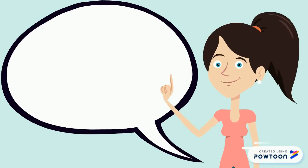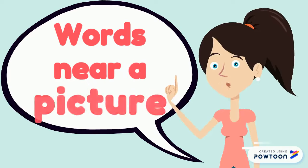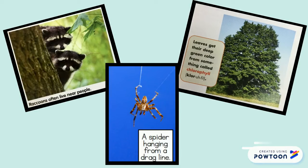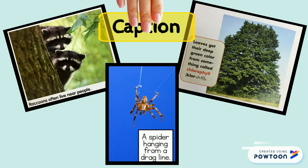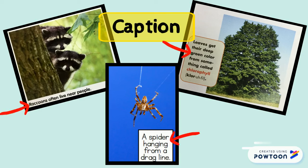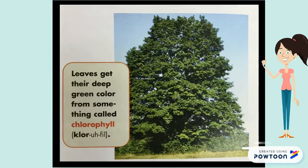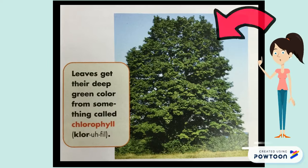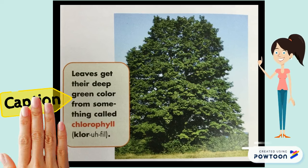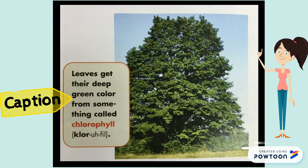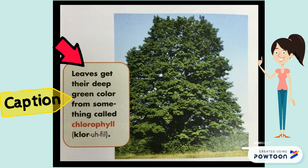In non-fiction books, you might also see some words near a picture like these. The words near a picture are called a caption. A caption can be below, besides, or on the picture. It tells you more about the picture. For example, we see a tree in this photograph. There's a caption next to the photograph. The caption says, "Leaves get their deep green color from something called chlorophyll." So these words in the caption tell us more about the green leaves in the photograph.